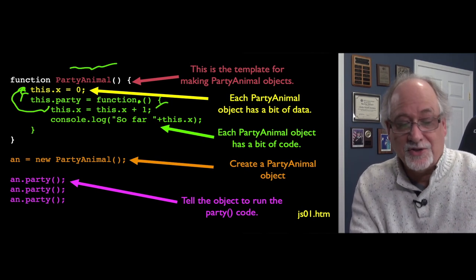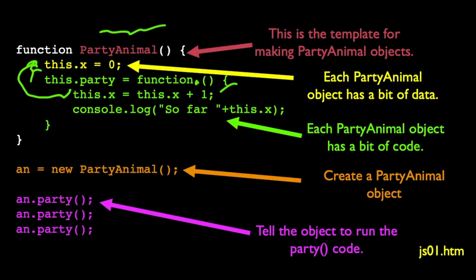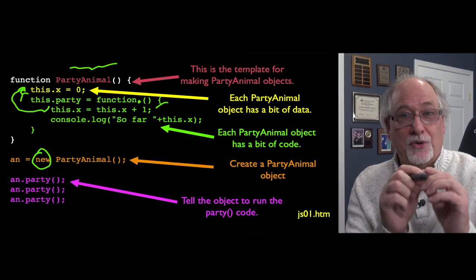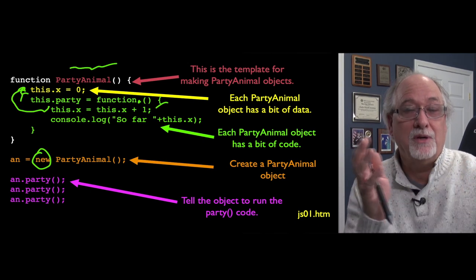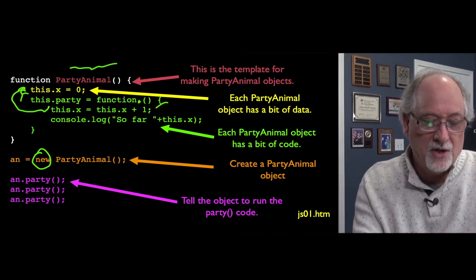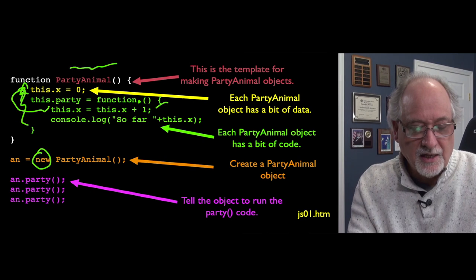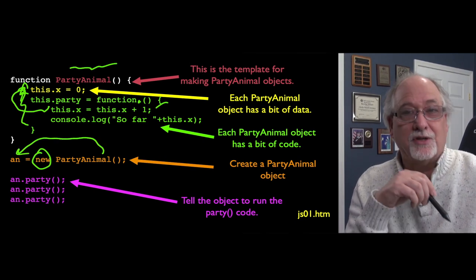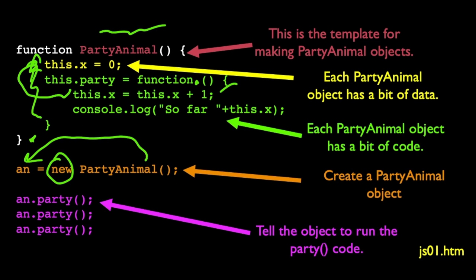We could just call this function PartyAnimal, but that's not what we do. We have a new keyword called new. And it says, look, don't just run this code. Create an empty object and then use the PartyAnimal code to sort of fill out that object with a bit of code and a bit of data. So that says, run all this, but instead of just running it, give me back the thing that eventually it produces. It's as if there's like a return statement at the bottom of this thing, at the bottom of PartyAnimal function. Give me back the object and now I have an object. And it's got an x in it and it's got a party in it.